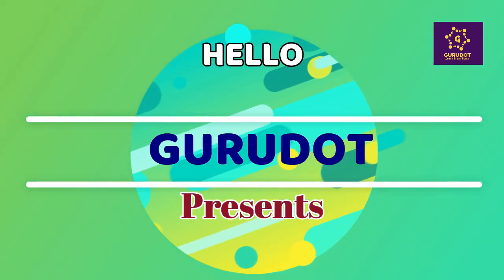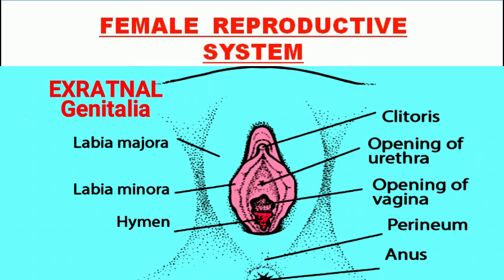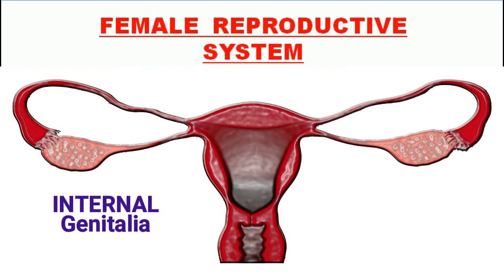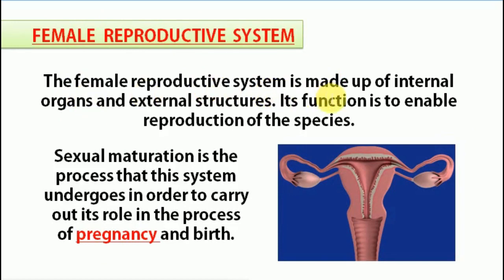Hello and welcome to our channel Guru Dot. In this video we will discuss the female reproductive organ in detail. We will discuss the female external genitalia and later on the internal genitalia. The female reproductive system is made up of internal organs and external organs, and its main function enables reproduction of the species.